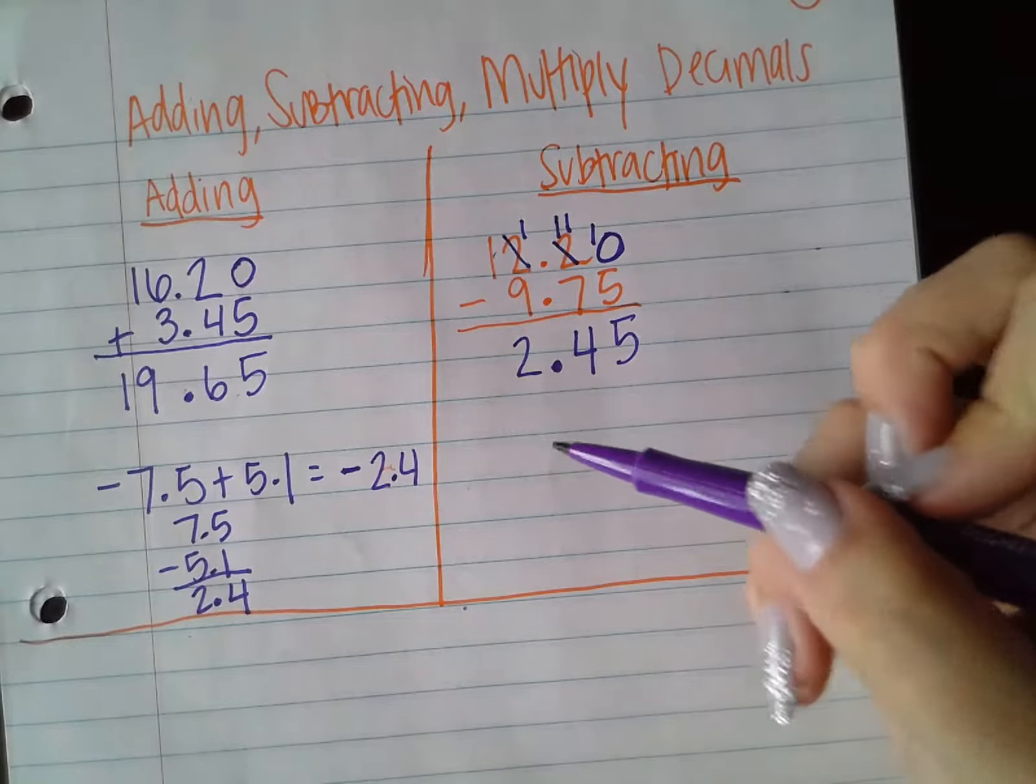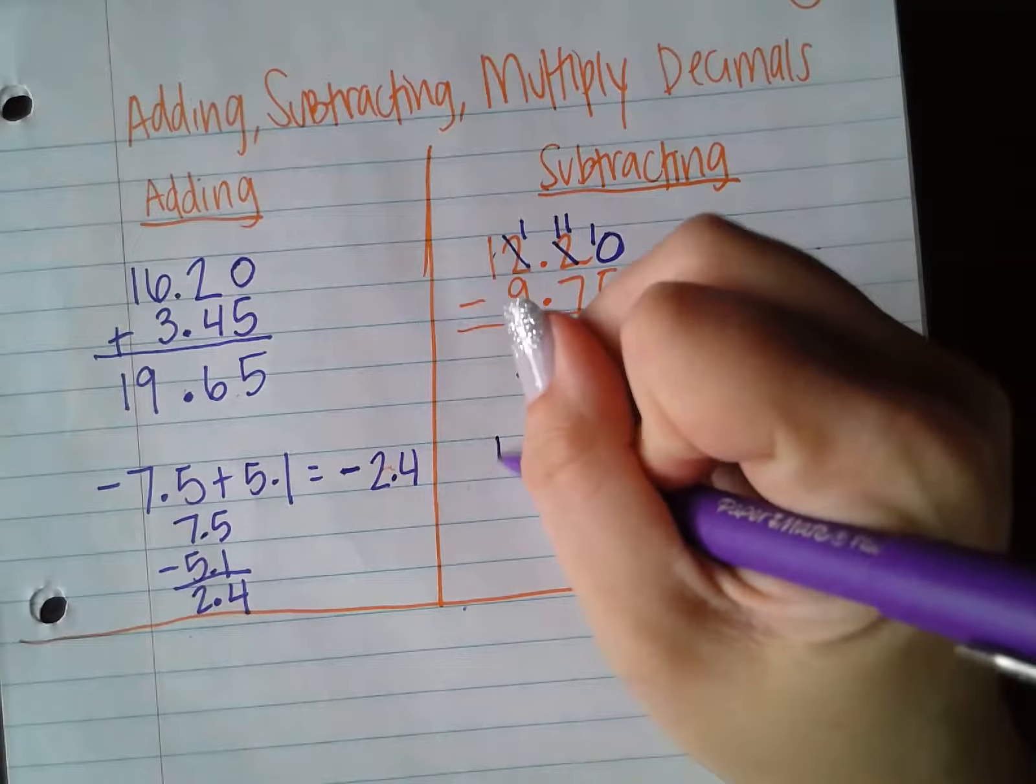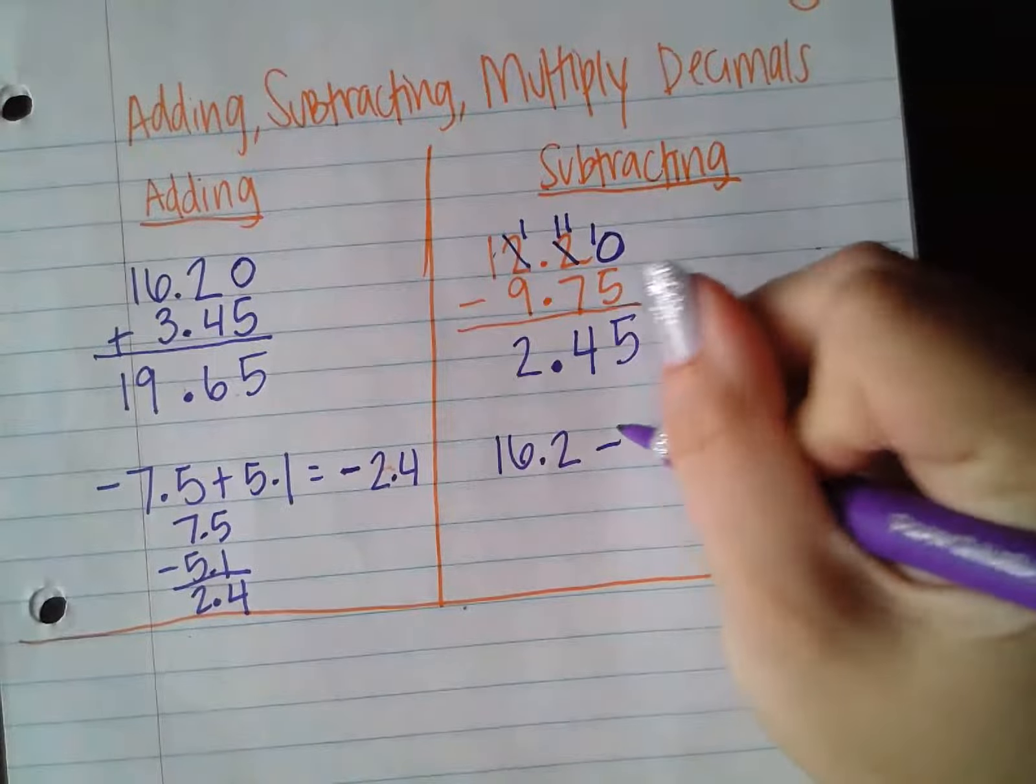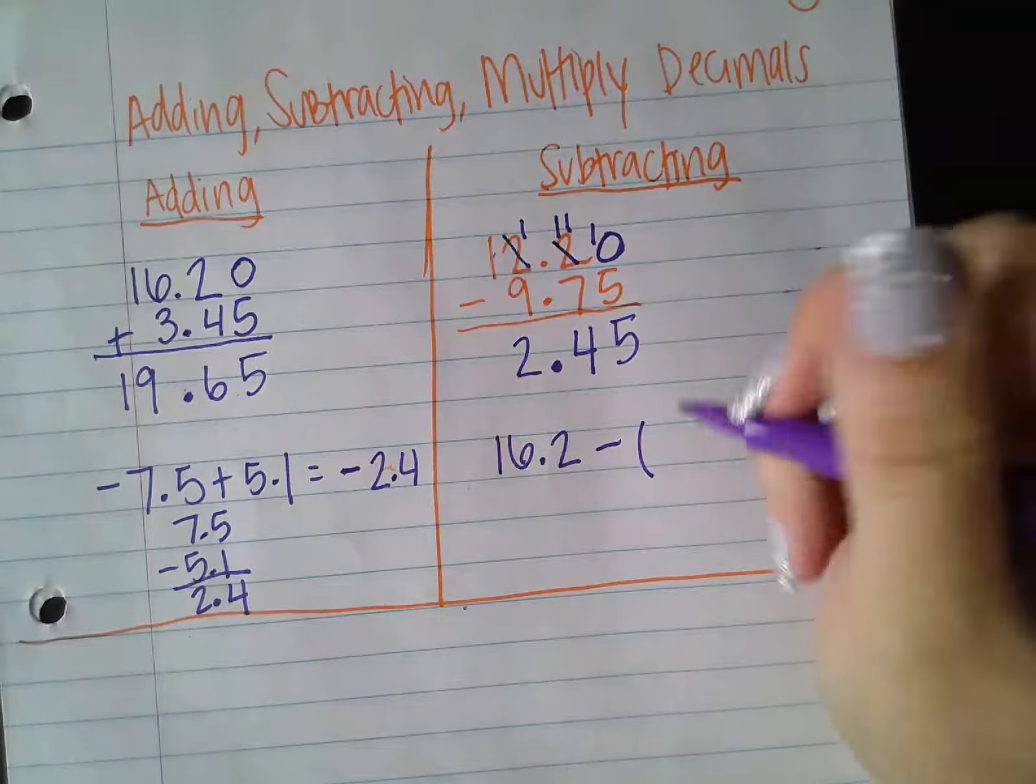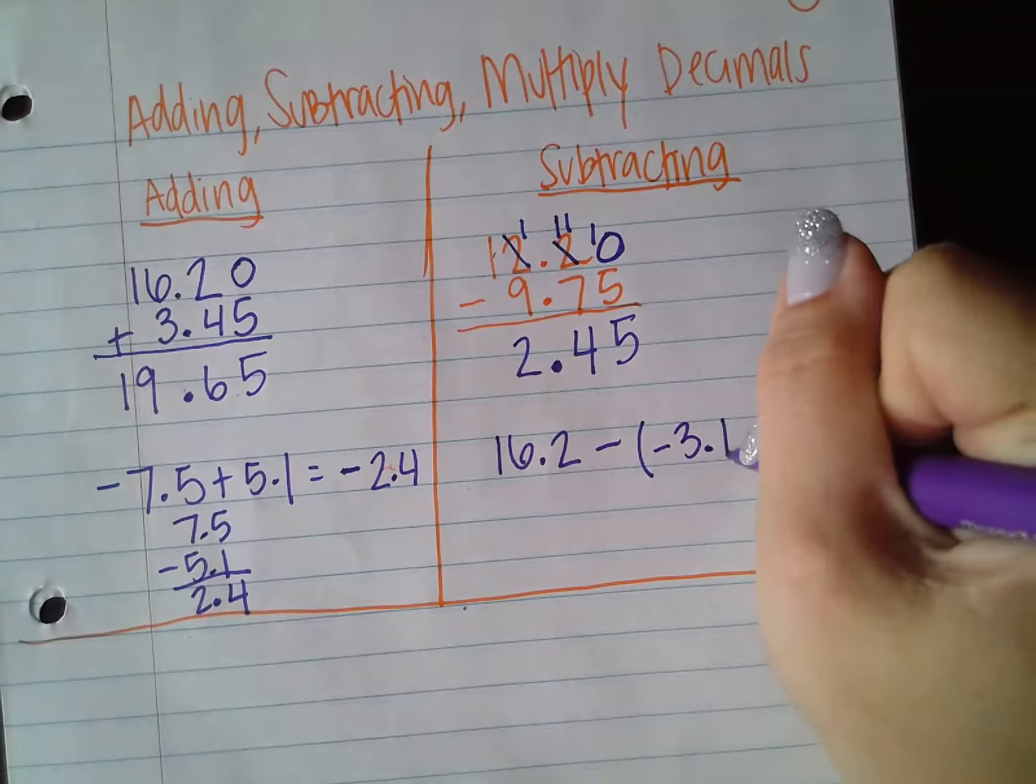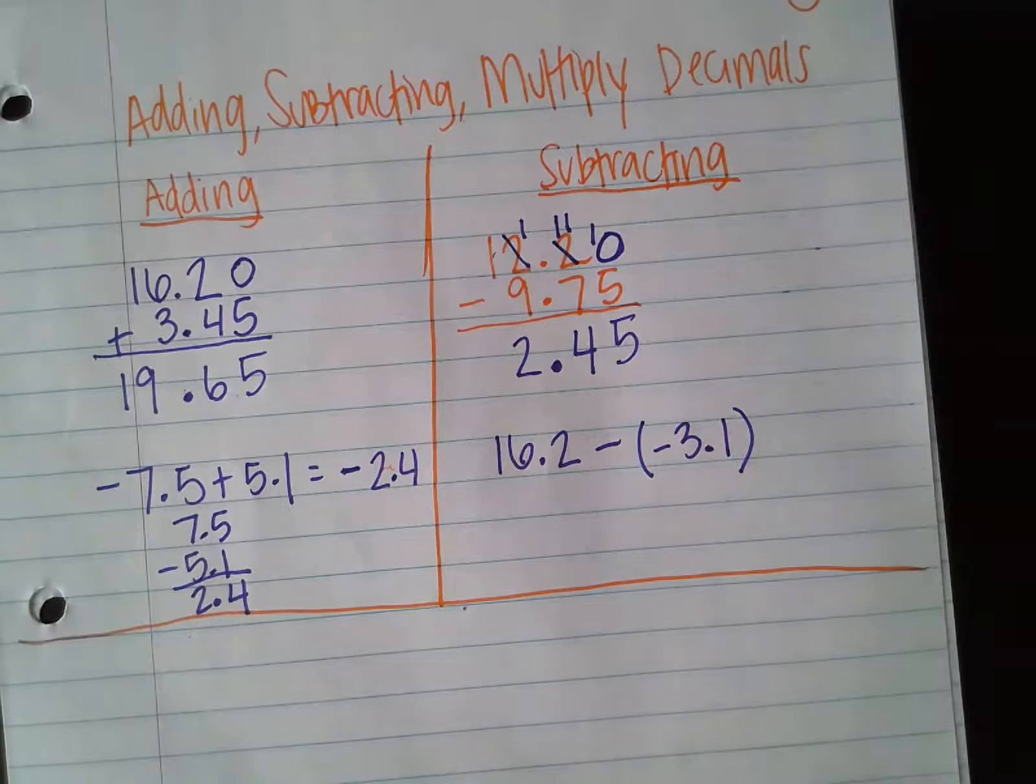So let's say we have the problem 16.2 minus a negative 3.1. So we're going to subtract a negative.